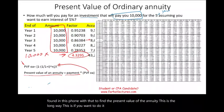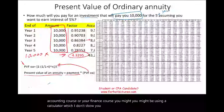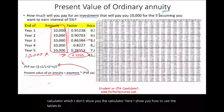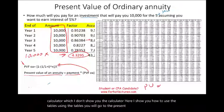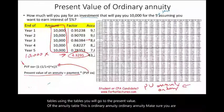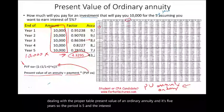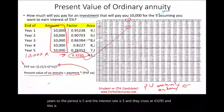Using tables, you go to the present value of the ordinary annuity table — make sure you are using the correct table. For five years at 5%, the period is 5 and the interest rate is 5%, and they cross at 4.3295. That gives us the present value of the annuity. Rather than doing all those computations, those factors will be given to you.